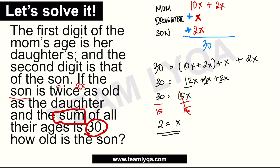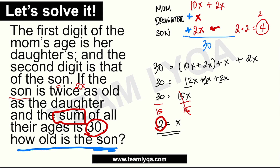The problem asks for the son's age. The son is 2x, so substituting x = 2: the son's age is 2 times 2 = 4. Let's verify: x = 2, so the daughter is 2 years old. The mom's age is 10(2) + 2(2) = 20 + 4 = 24. Adding 24 + 2 + 4 = 30. Correct! The son's age is 4 years old.